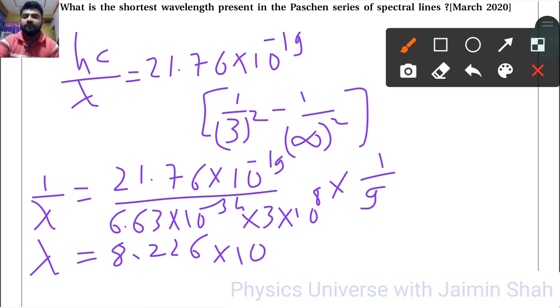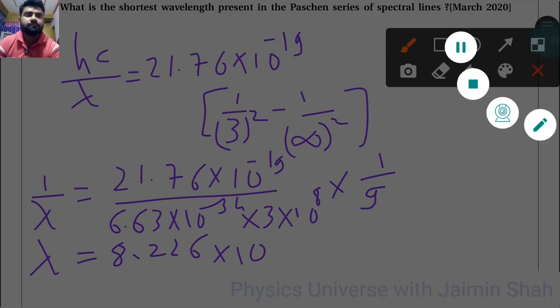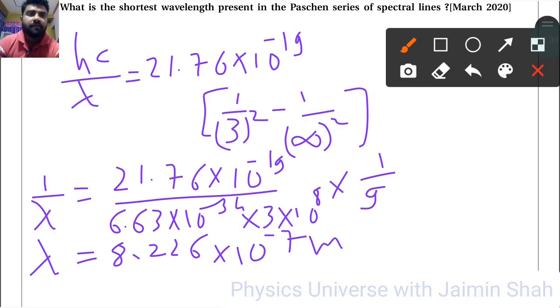So 34 minus 8 and here minus 19 will become plus 19, so it will go minus 19, right? So minus 7 meter, that is the wavelength.